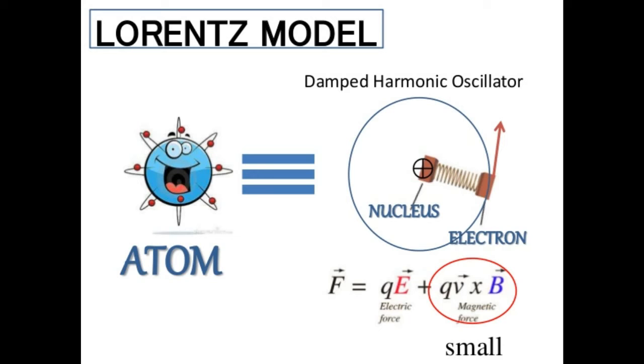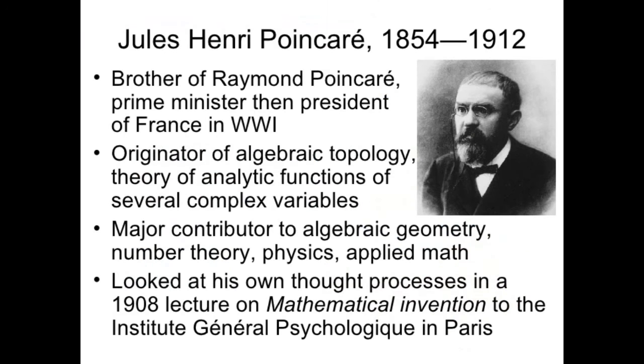Now, here's the question. Did Einstein coin the name relativity? No! Poincare invented the term relativity. He was the first to assert that no velocity can exceed that of light.